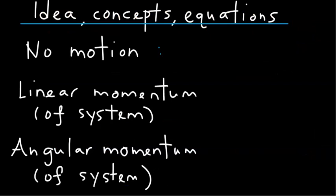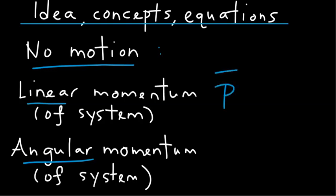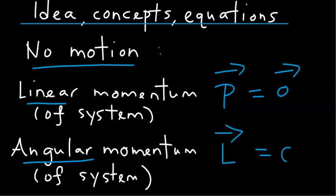A system that is in static equilibrium has no motion — no linear motion and no angular or rotational motion. The absence of linear motion implies the linear momentum of the system is zero, and the absence of rotational motion implies its angular momentum is zero.